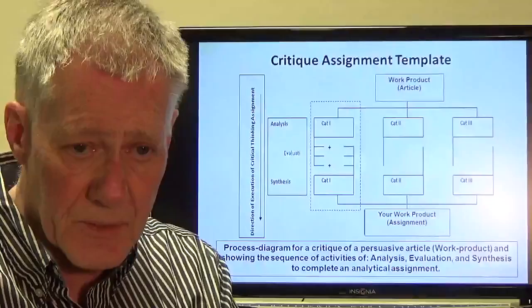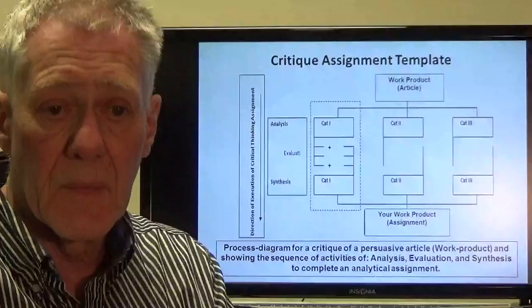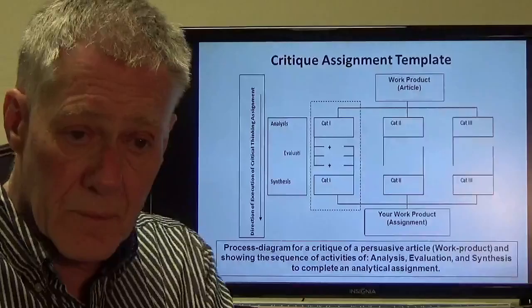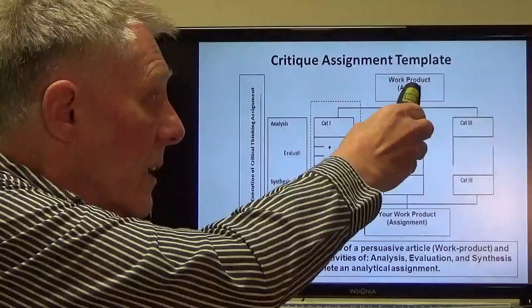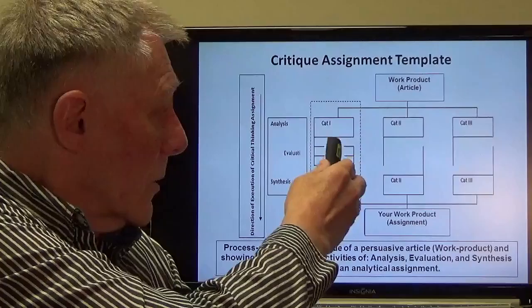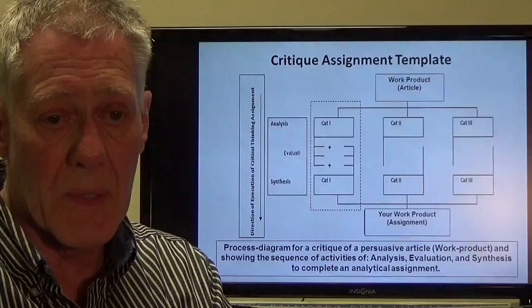Here's the template. You're assigned an article, and that's the work product. When you read it through — and if it's well written — it'll say 'here's my position, and I support this position in three categories: one, two, and three.' Then there'll be another paragraph or section in the article which we'll talk about under category one — all the various support pieces. Those will be the supports the author has for why he has this position and the support underneath that category.